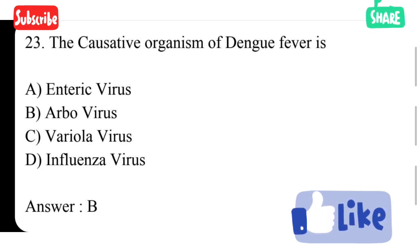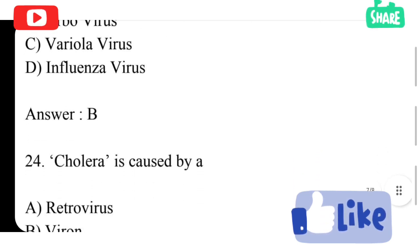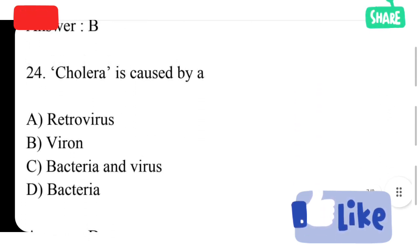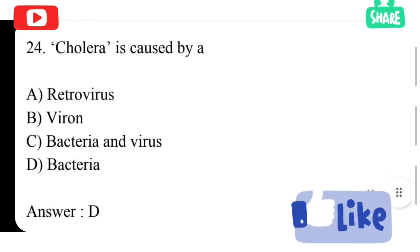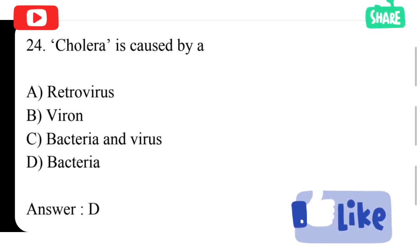The causative organism of dengue fever is option A enteric virus, option B arbovirus, option C variola virus, option D influenza virus. Option B is correct answer, arbovirus. Next: cholera is caused by option A rotavirus, option B vibrione, option C bacteria and virus, option D bacteria. Option D is correct answer, bacteria.